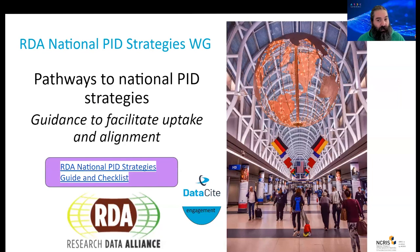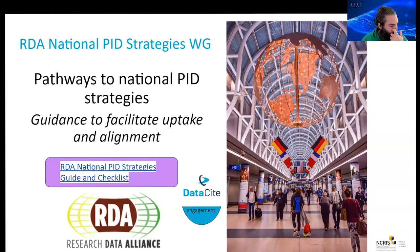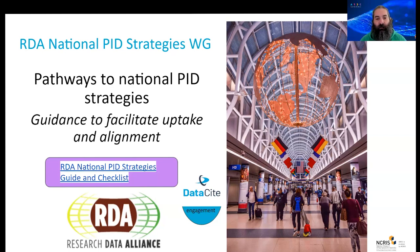Australia is not the only country developing a national PID strategy and roadmap — the UK and Canada are among several others doing so as well. The Research Data Alliance has a National PID Strategies Working Group, co-chaired by my colleague Natasha Simons, which is collecting case studies from around the world on how different countries are approaching consistent application of PIDs in research and innovation.